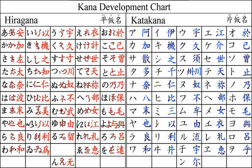Syllables beginning with the voiced consonants g, z, d, and b are spelled with kana from the corresponding unvoiced columns and the voicing mark, dakuten. Syllables beginning with p are spelled with kana from the h column and the half-voicing mark, handakuten. Note that certain ka and remaining entries in the rightmost column, though they exist, are not used in standard Japanese orthography.